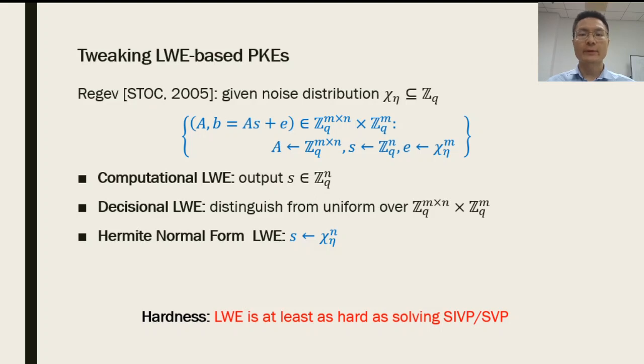The Learning With Errors problem was first introduced by Regev in 2005, which basically asks an algorithm to solve a noisy modular equation. That is, b equals a times s plus e, where a is a uniform matrix, s is a uniform vector, and e is chosen from a noise distribution chi with parameter eta. The decisional variant asks an algorithm to distinguish the LWE tuple from uniform, which is as hard as the computational LWE problem. A major variant is the normal form LWE, where the secret s is also chosen from the noise distribution. The LWE problem is provably as hard as some lattice problems such as the SIVP and SVP problems in the worst case.